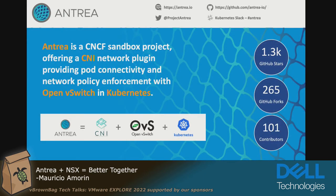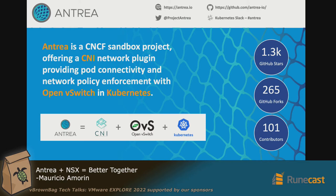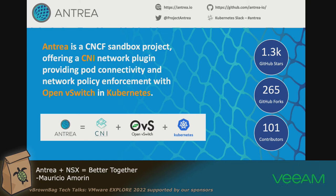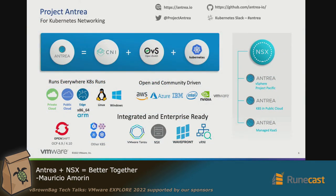Antrea is a CNI — container network interface — that was developed by VMware a few years ago. It is a CNCF project, meaning it is a fully open source project that you can use with whichever Kubernetes distribution you want. It provides connectivity for the pods inside the Kubernetes cluster. It is based on OVS, the Open vSwitch project, and it is a very popular project on GitHub with more than 1,300 stars.